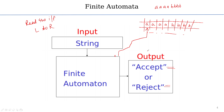The reading continues either until a final state is reached, or until we get an empty string — meaning the user is no longer giving any input. That is called an empty string in the input. This is the basic mathematical model of finite automata.